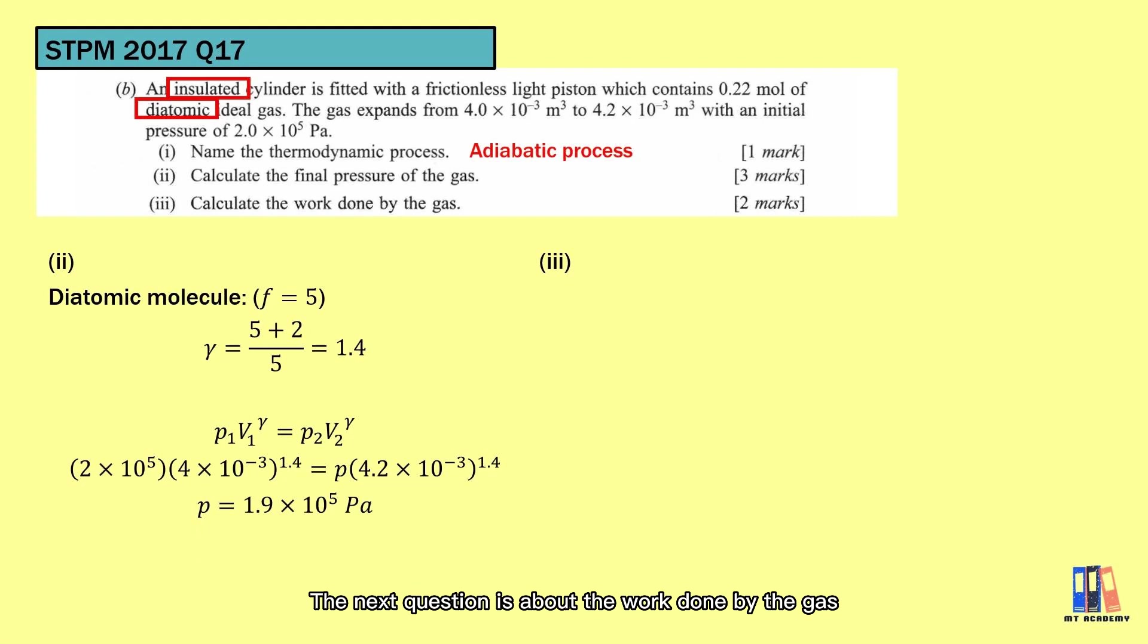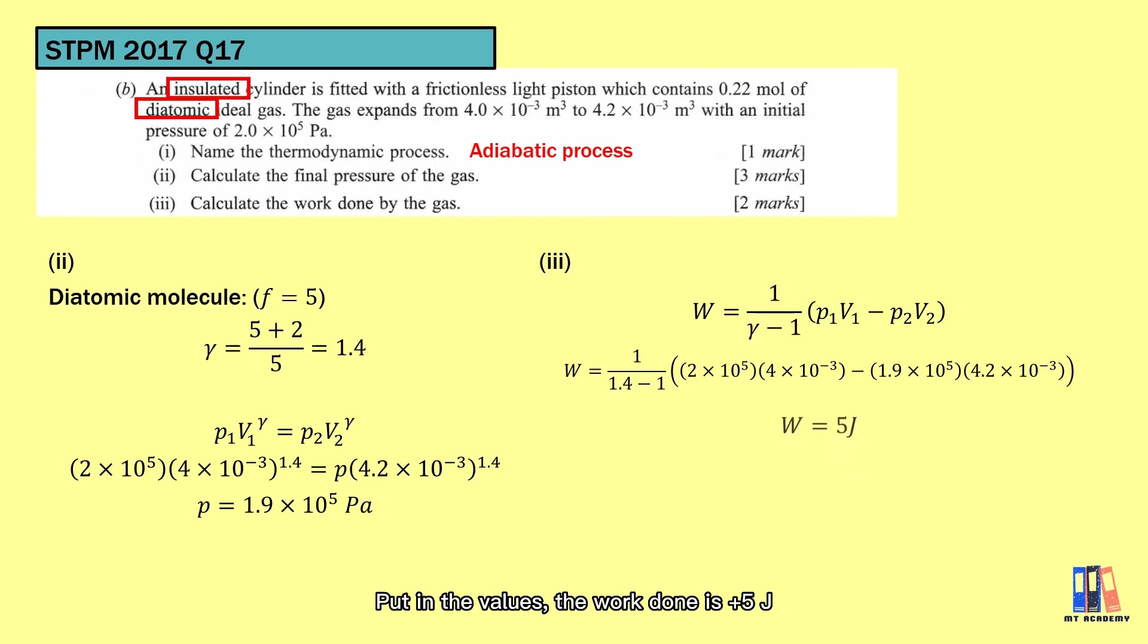The next question is about the work done by the gas. We have the gamma, pressure and volume. We can apply the equation 1 over gamma minus 1 multiplied the bracket of P1V1 minus P2V2. Put in the values. The work done is positive 5 joules, which means the work is done by the gas.